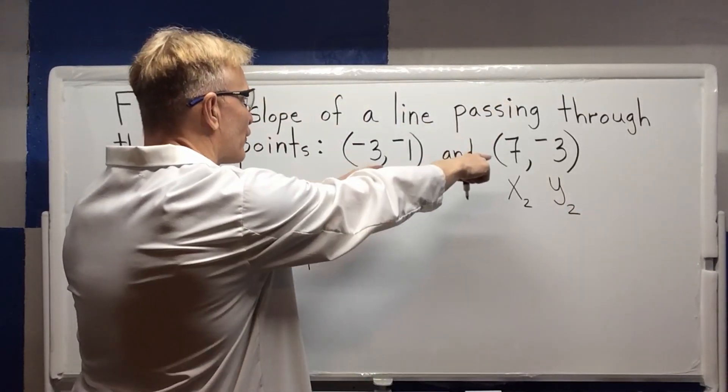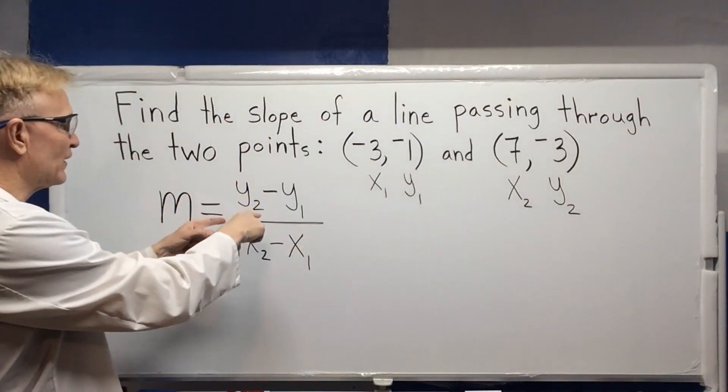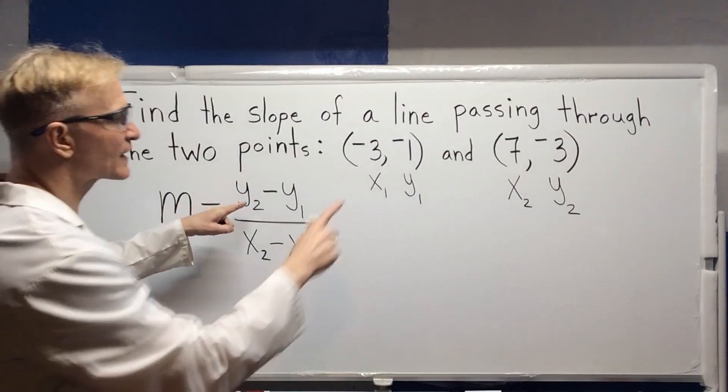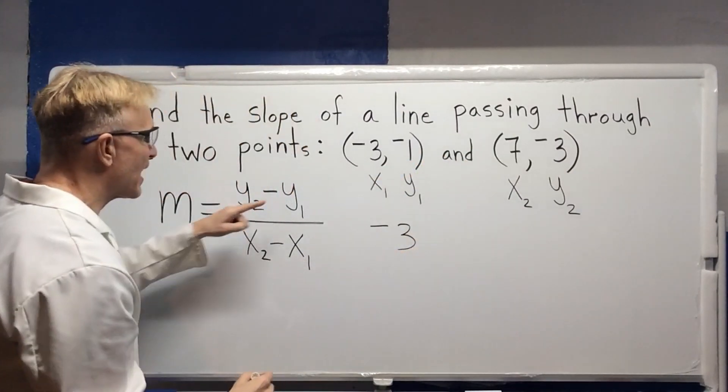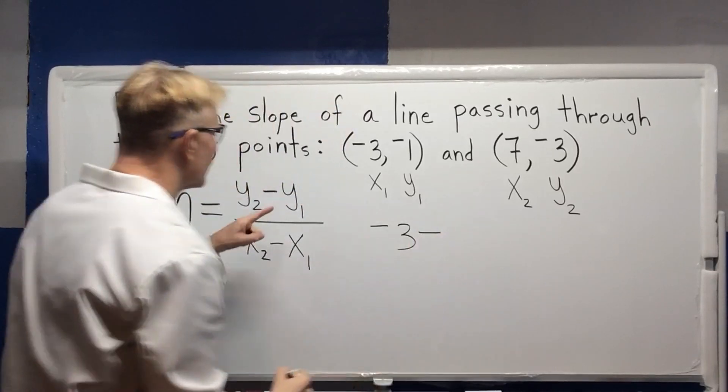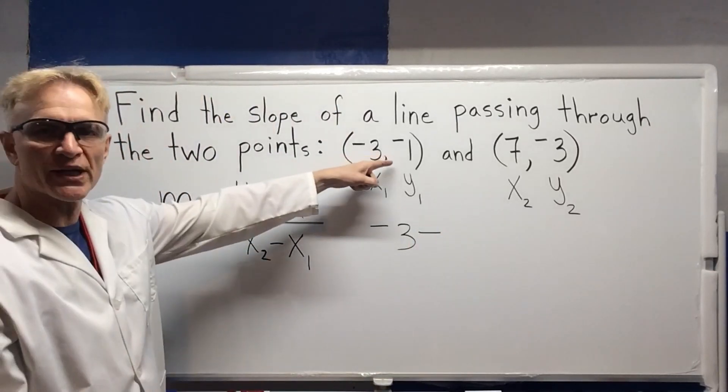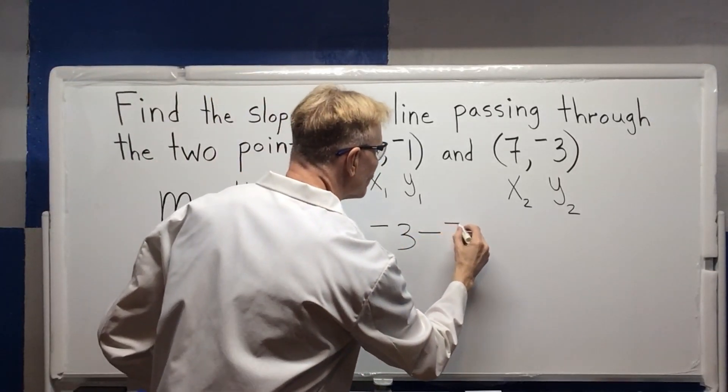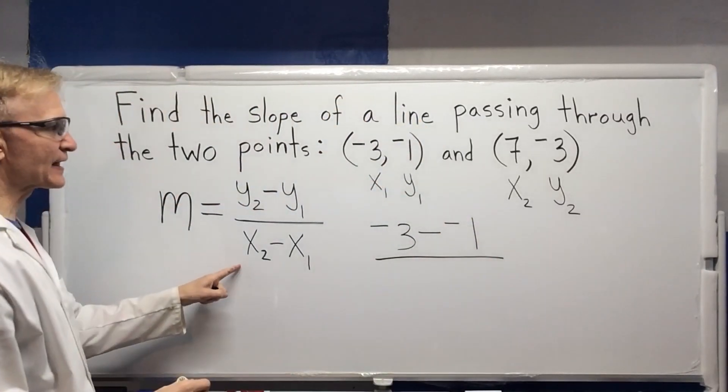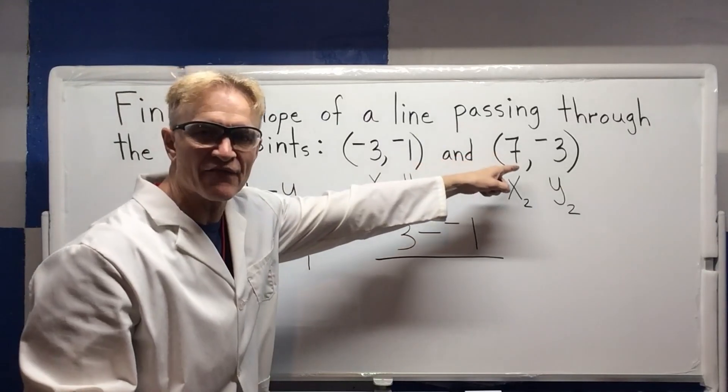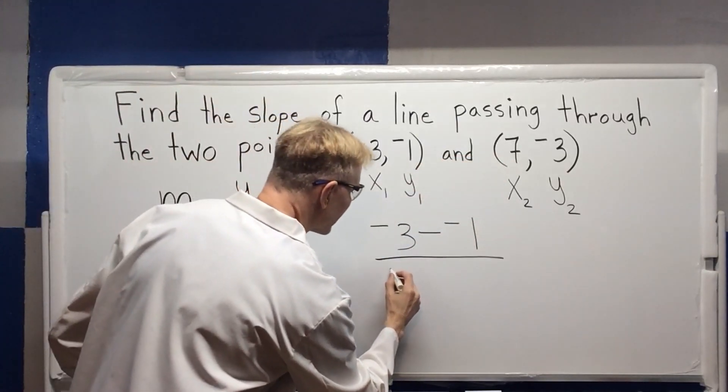Now I insert those points into my formula. So y sub 2 is negative 3 minus y sub 1. y sub 1 is negative 1 divided by x sub 2. x sub 2 is 7 in this particular case.